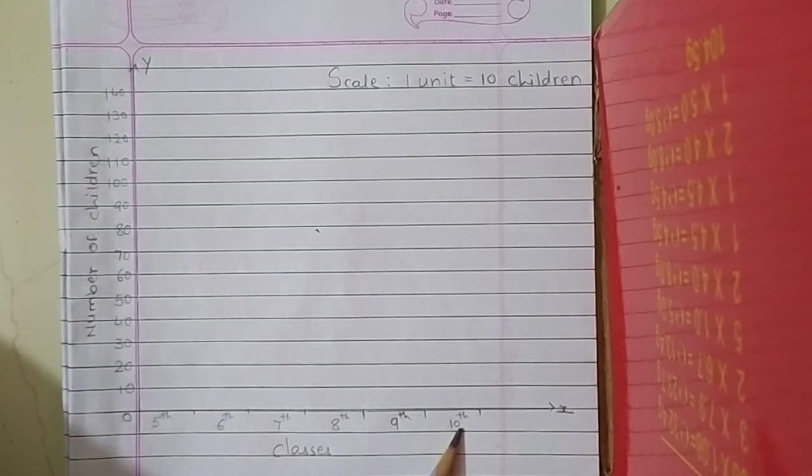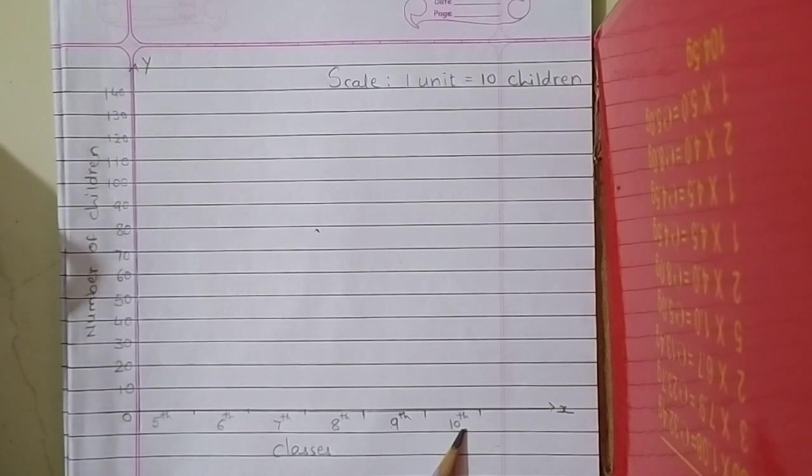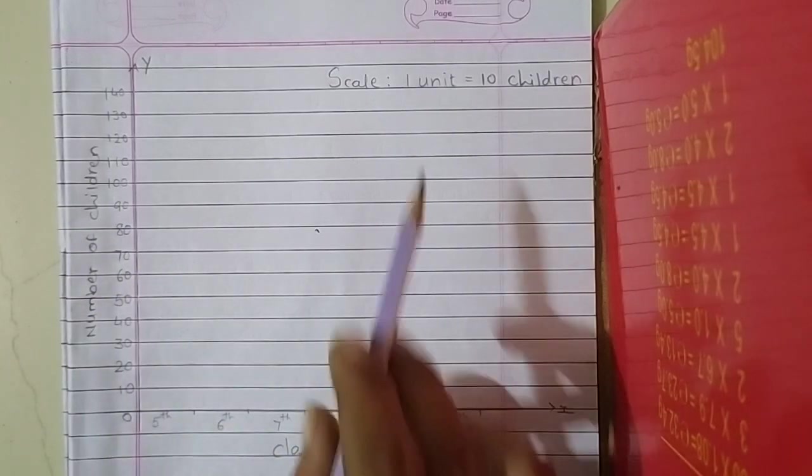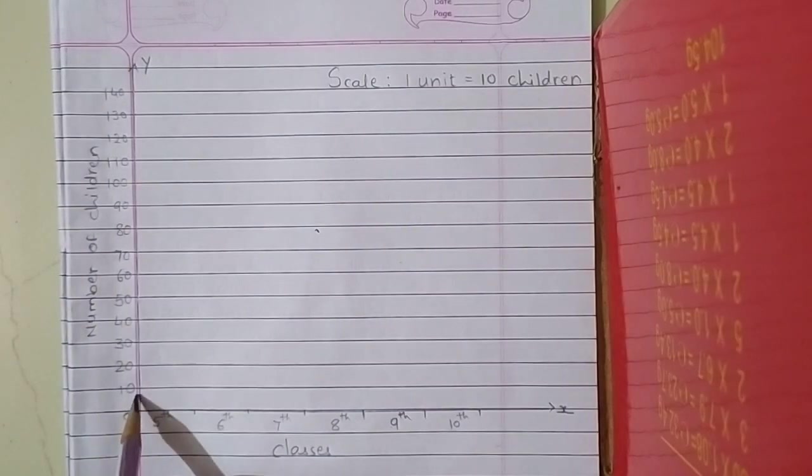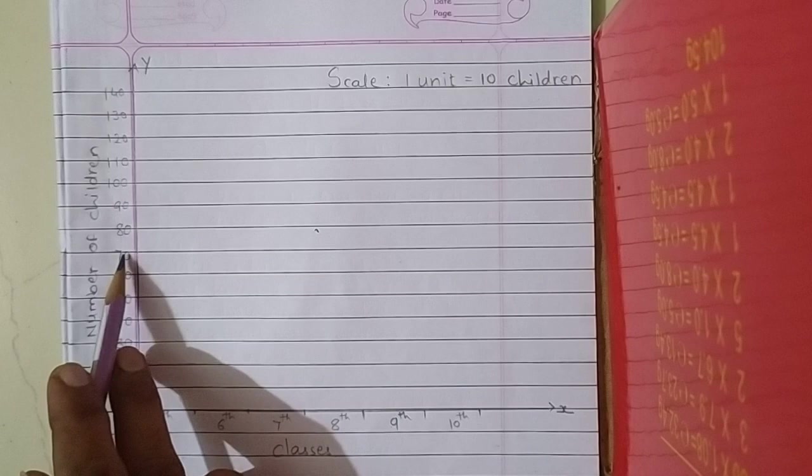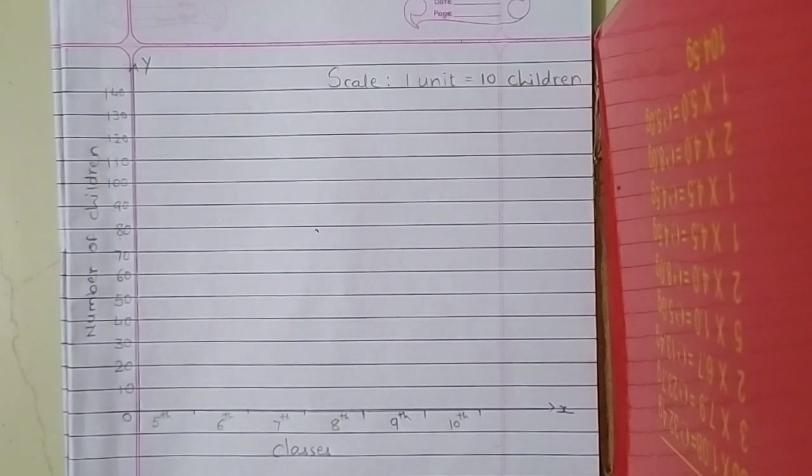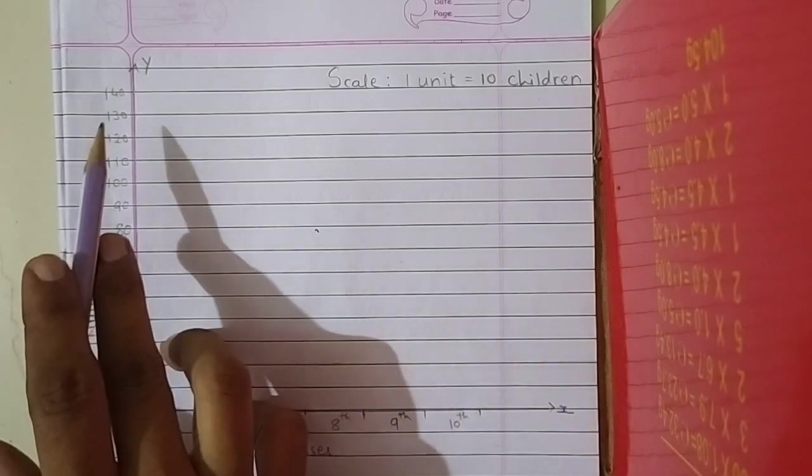So now students, look at your textbook. In the first, 5th class, the number of children are 135. And we have taken scale: 1 unit equals 10 children. So 0, 10, 20, 30, 40, 50, 60, 70, 80, 90, in this way till 140. Because the highest number of children is 135, so 140 is enough.